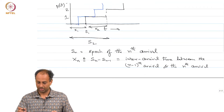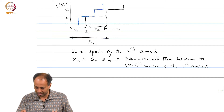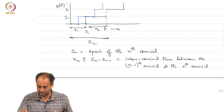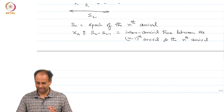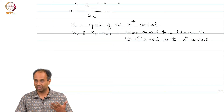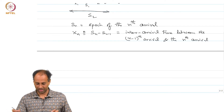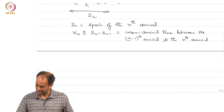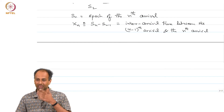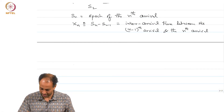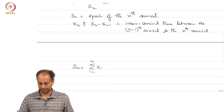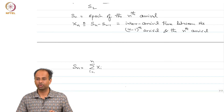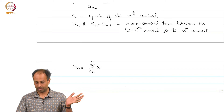In this picture, S₁ is the epoch of the first arrival and S₂ is the epoch of the second arrival. Xₙ = Sₙ − Sₙ₋₁ is the time between the nth and (n−1)th arrival. There is a one-to-one relationship: given the Sᵢ's you can calculate the Xₙ's, and given the Xᵢ's you can calculate the Sᵢ's. For example, Sₙ = Σᵢ₌₁ⁿ Xᵢ. You can go back and forth between the sequence of Xᵢ's and the sequence of Sᵢ's.